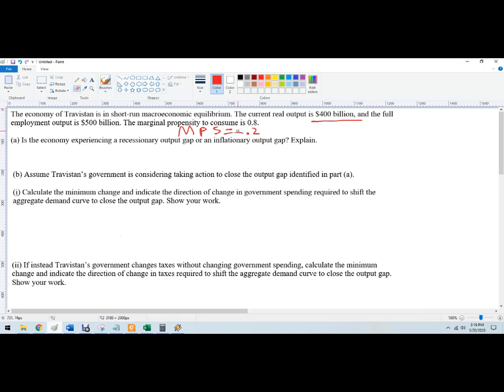Marginal propensity to consume and marginal propensity to save always add up to one. Part A says, is the economy experiencing a recessionary gap or an inflationary gap? It's a recession. If full employment is $500 billion and currently we're only at $400 billion, the difference is $100 billion.